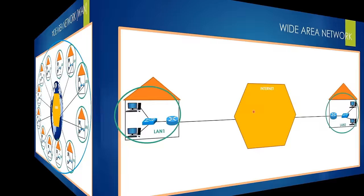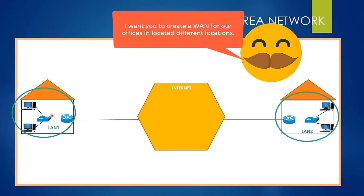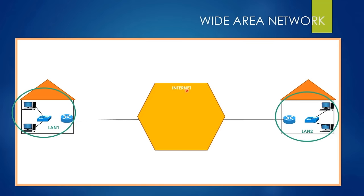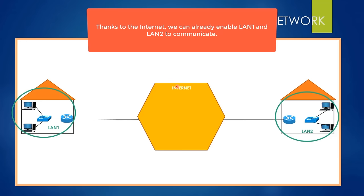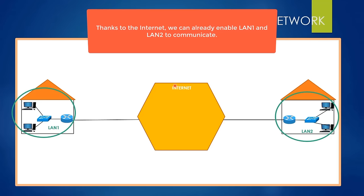Our boss wants the computers in these two different offices to work as if they're in the same environment — so our goal is WAN. If we create a WAN, these LANs can communicate as if they're in the same environment. But there's an important point to consider — thanks to the internet, we can already enable these LANs to communicate. The internet stands for the network of networks, meaning the internet itself represents connecting millions of LANs together. Hence, if these LANs are already connected to the internet, computers in LAN one and LAN two can already communicate over the internet.